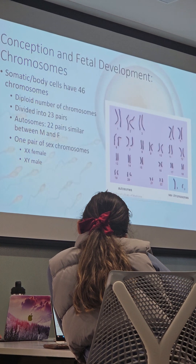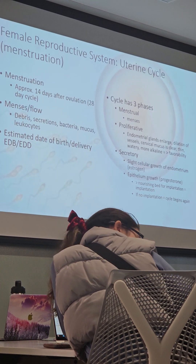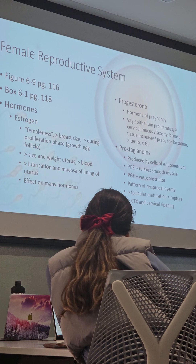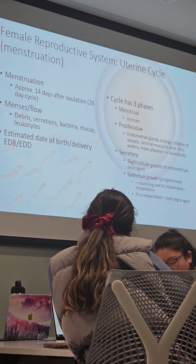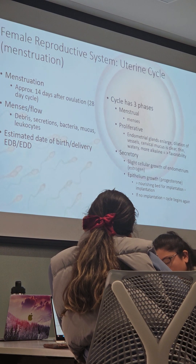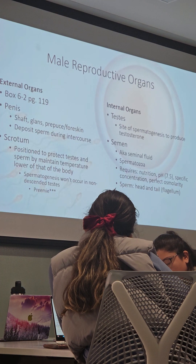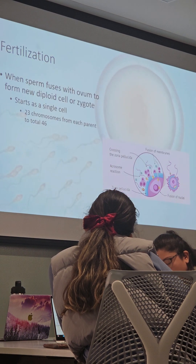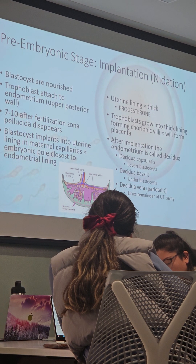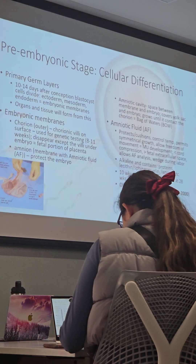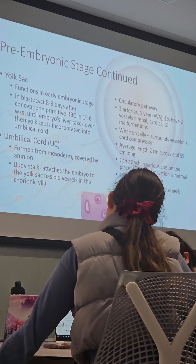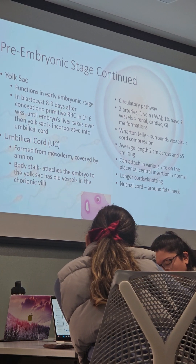Definitely know the role of estrogen, progesterone, prostaglandins, and hormones FSH and LH, and just the common approximation of somebody's menstruation cycle. This chapter has seven questions. Know the role and assessment of the umbilical cord — what it should look like. This slide is important for all the content on the umbilical cord.